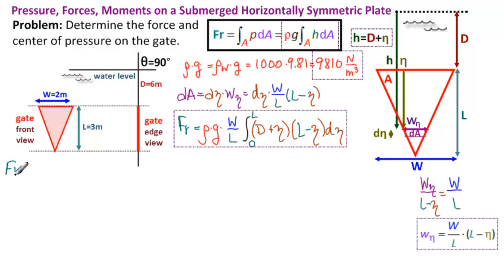So we have FR equals rho times G, 2 over 3, and then our integral is from 0 to 3. We have 6 for D plus eta times 3 minus eta, d eta. So we have rho G times 2 thirds, integral 0 to 3, we have 18 minus 3 eta minus eta squared, d eta.